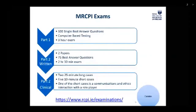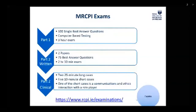MRCPI Exams: plan when you will attempt to take the exams if you haven't already. We recommend attempting Part 1 during your first year of BST. After starting BST, you have four years to pass all parts of the MRCPI exams and a maximum of six attempts for each component. Part 1 takes three hours and is 100 single best answer questions, all computer-based. Part 2 takes two and a half hours and is composed of two papers and 75 best answer questions. The clinical is broken into two parts: the first part has two 25-minute long cases, and the second part has five 10-minute short cases, one of which is the communication and ethics interaction with a role player. With COVID-19, a new exams calendar has been published on our website — I'd encourage you to check regularly for any updates.